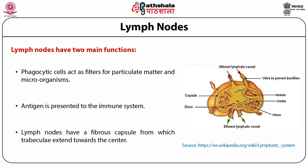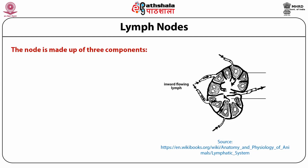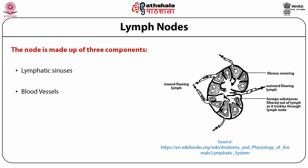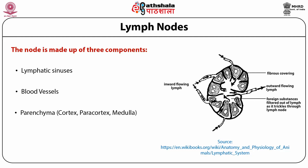Lymph nodes have a fibrous capsule from which trabeculae extend towards the center. The node is made up of three components: lymphatic sinuses, blood vessels, and parenchyma — which is divided into three parts: cortex, pericortex, and medulla.